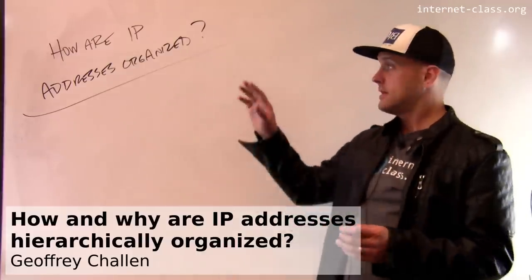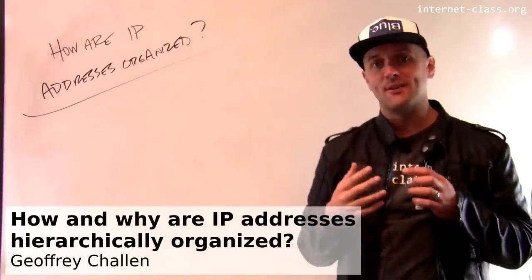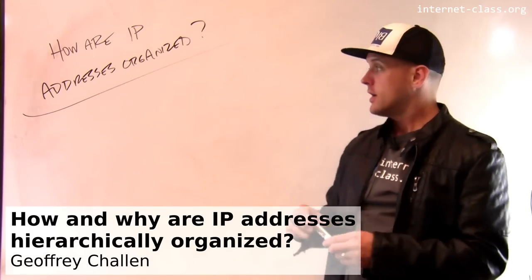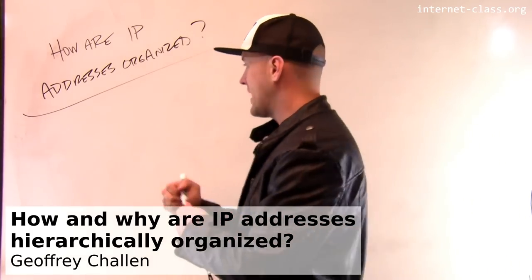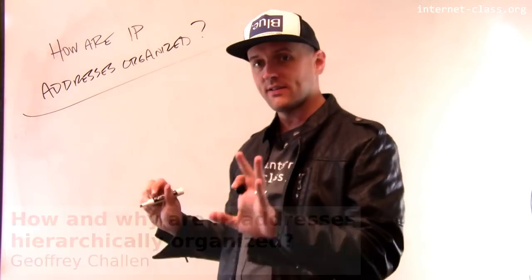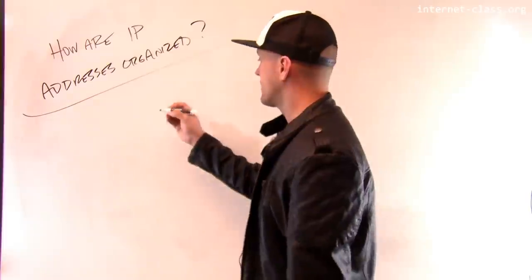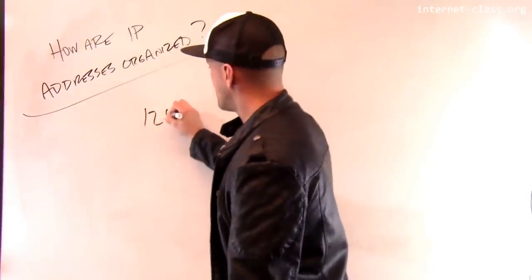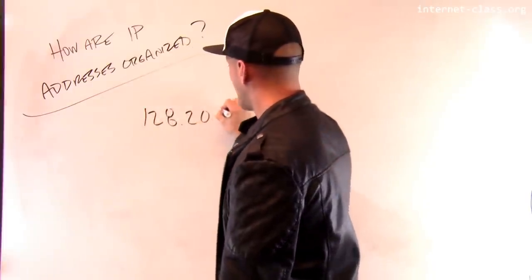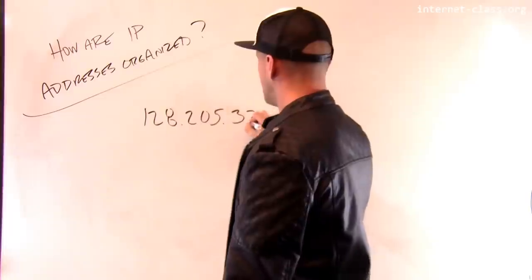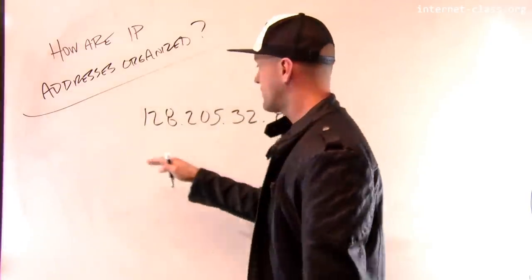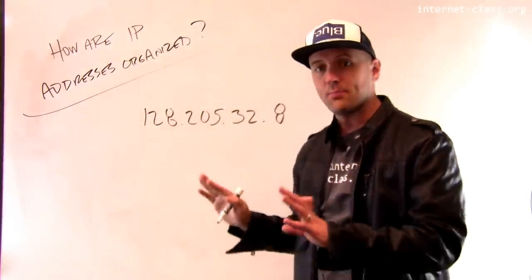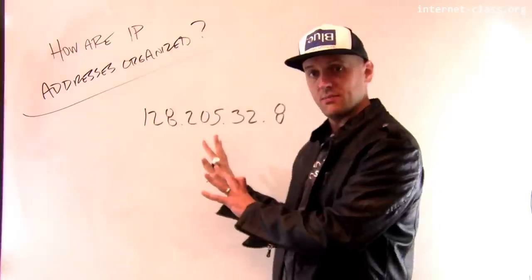Let's talk about IP addresses and how IP addresses are organized. Remember, IPv4 address is dotted decimal notation showing four parts. So I might have an address that's 128.205.32.8. So I have four numbers separated by periods. This is how these are typically displayed.